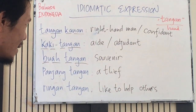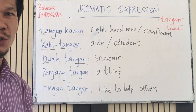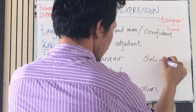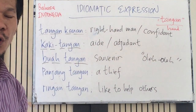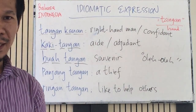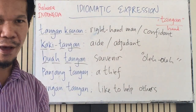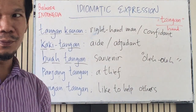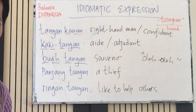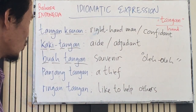'Buah tangan' means souvenirs. In Bahasa Indonesia it is also called 'oleh-oleh.' Oleh-oleh means that when you go to some place for a holiday, you bring souvenirs such as handicrafts, clothes, or food from the place you visited, and give them to your loved ones at home.